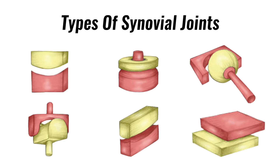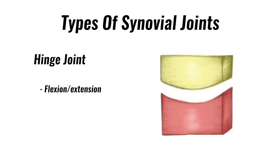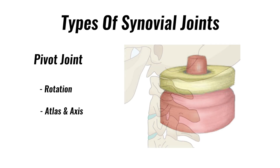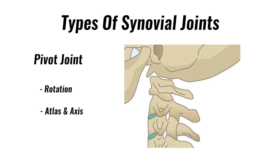There are six types of synovial joints, classified by the shape of the joint and the movement available. Hinge joints allow flexion and extension and are found in the knee and elbow joints. A pivot joint allows one bone to rotate around another — for example, the atlas and axis at the top of the neck.